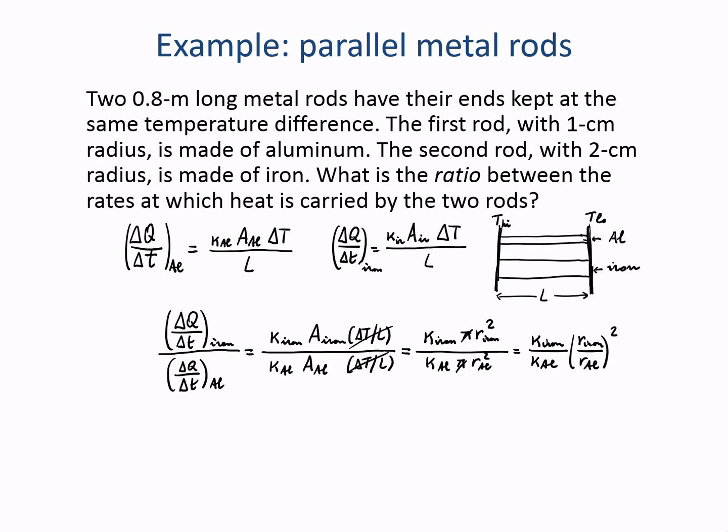We look up the thermal conductivity. For the aluminum, it's 240 joules per second meter kelvin. And for iron, it's 79 joules per second meter kelvin. And at this point, all we have to do is plug in the numbers.